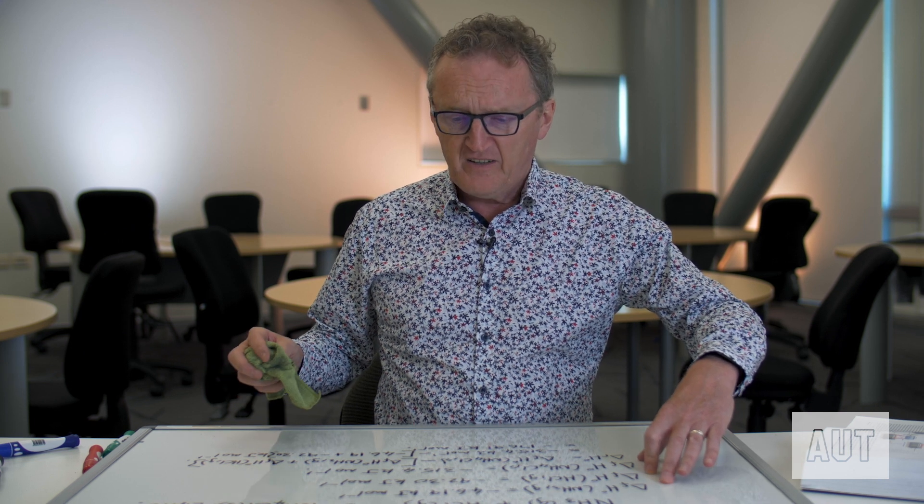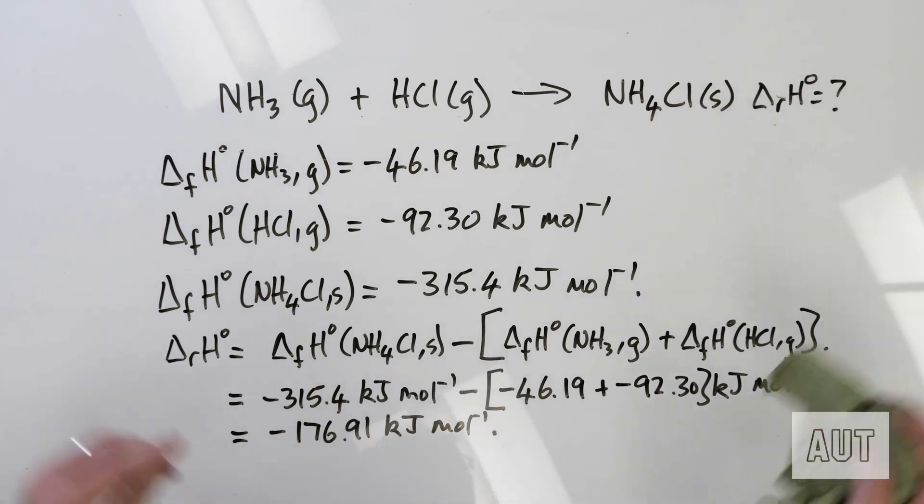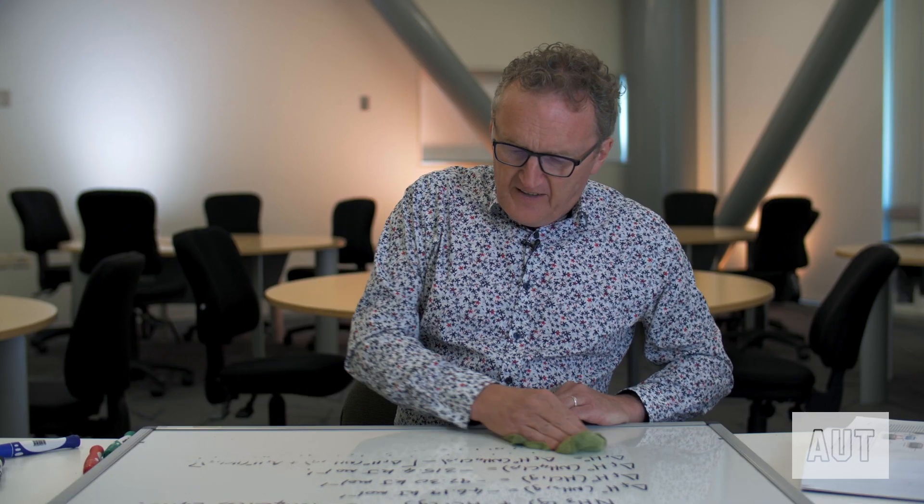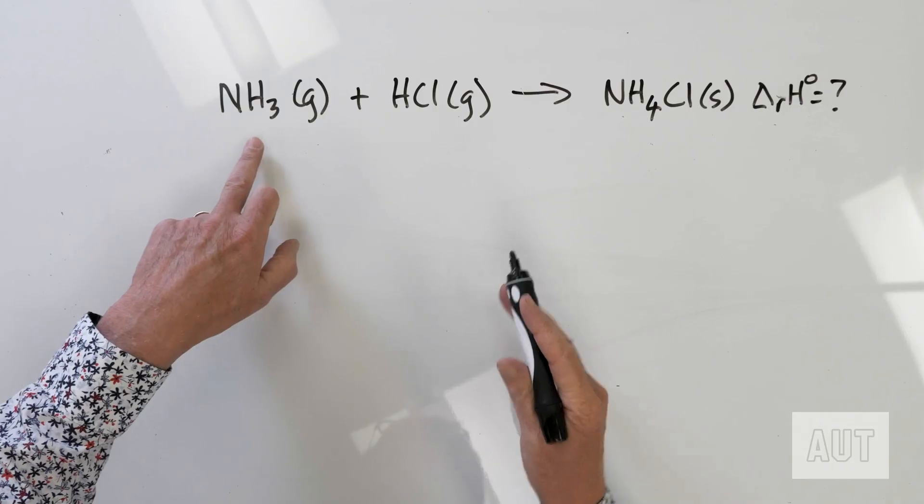That's all well and good, but you might be asking why does this work? Why do the sums of the standard enthalpies of formation give you this? Well, let's go ahead and show that this really is a Hess's law problem in disguise. Remember Hess's law — it doesn't matter how you carry out the reaction, you are still going to get the same answer. So let's write out the equations for the standard enthalpy of formation of these components.